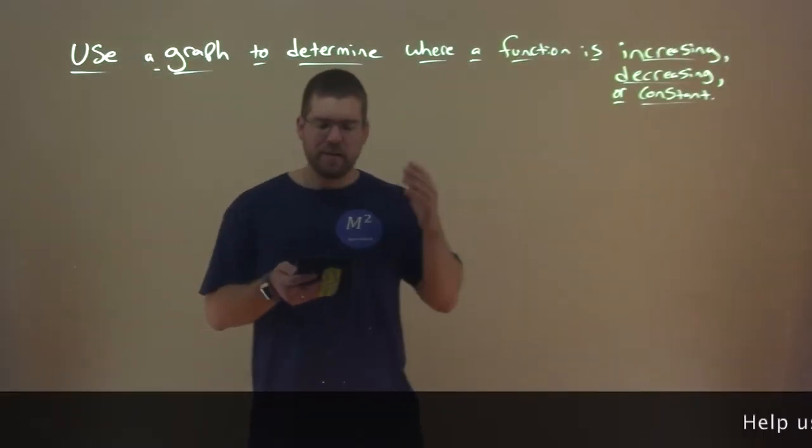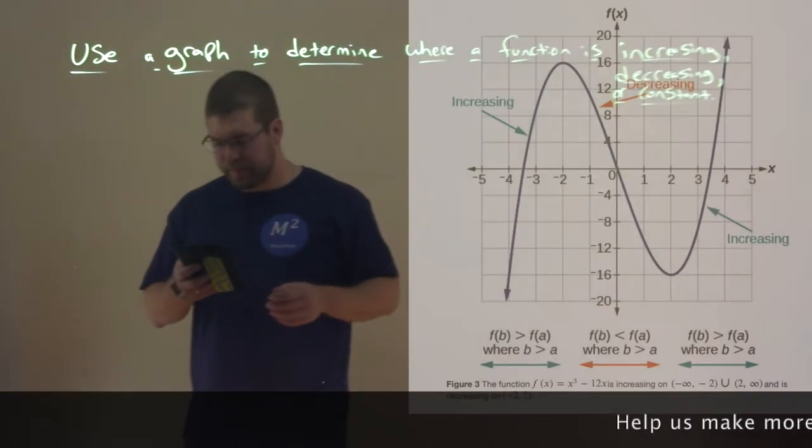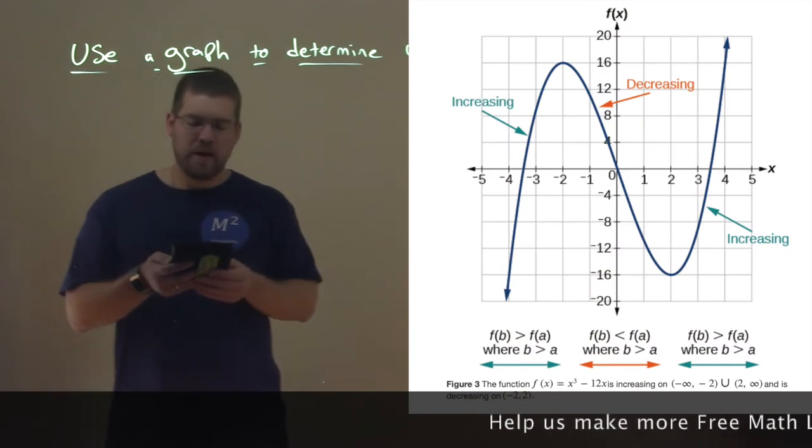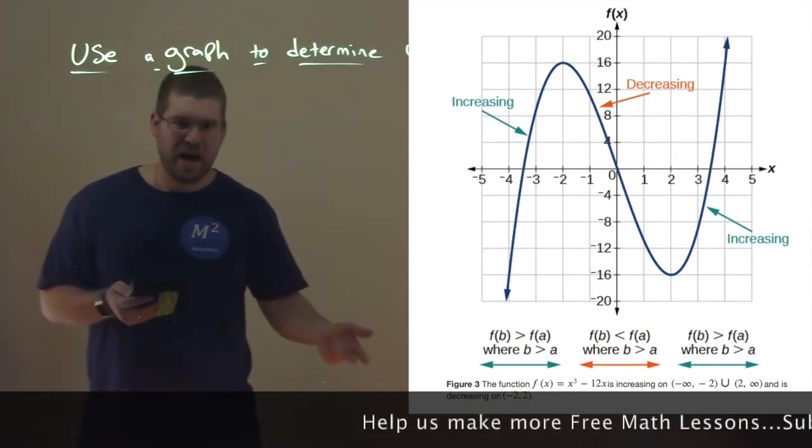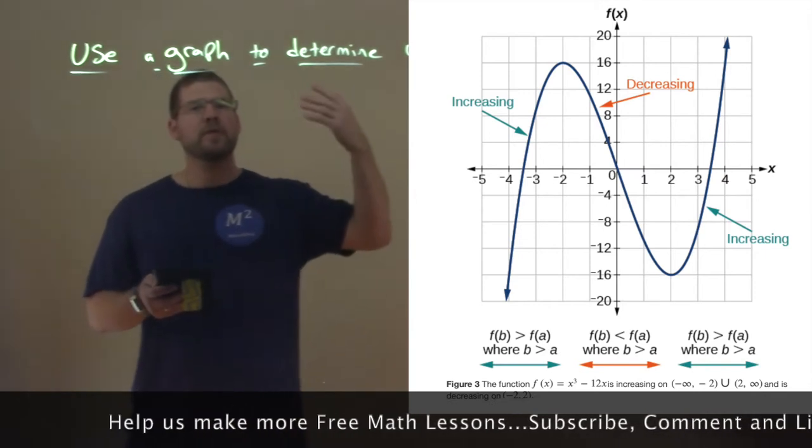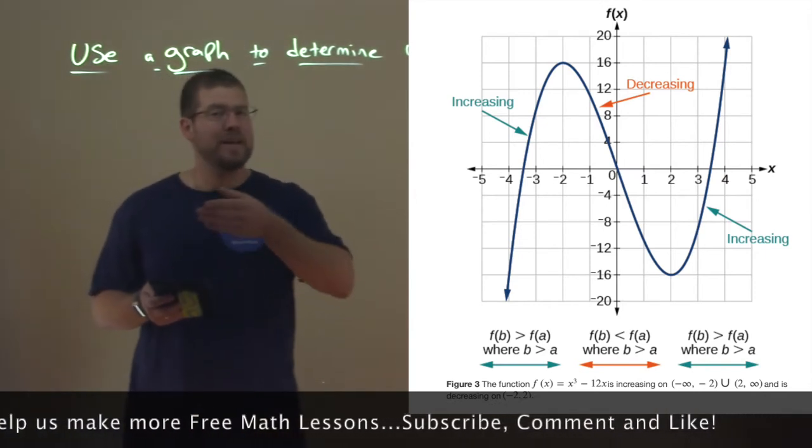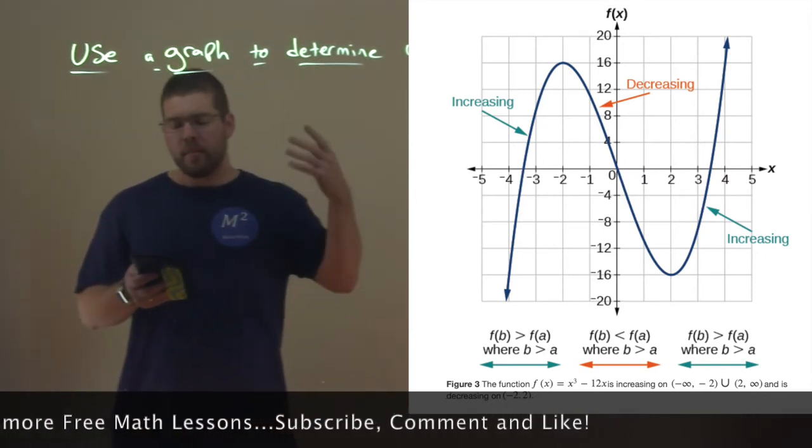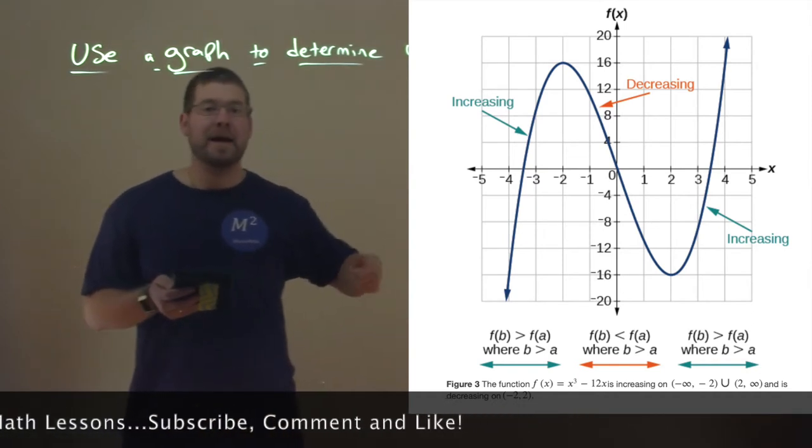So let's look at this graph right here. Notice the graph goes up, then down, then back up again. We can see it's increasing, going up if we're reading left to right, then going back down, then coming back up again.